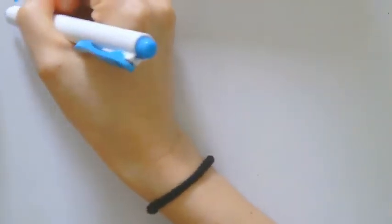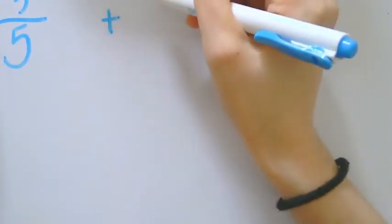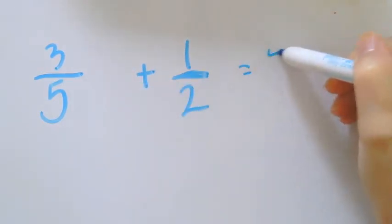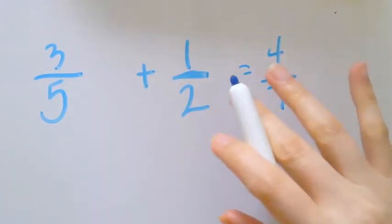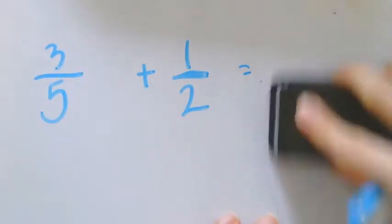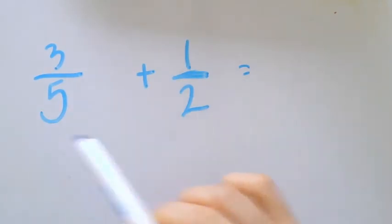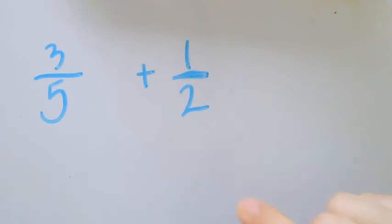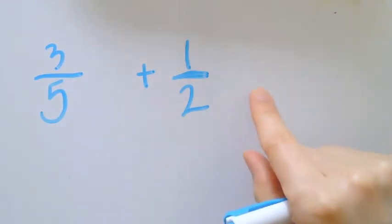Now we're going to move on to making sure that we can add by finding a common denominator. So if we're going to add three fifths plus one half, can I add that up right now? Can I say three plus one is four, five plus two is seven? Yes, I can do that. But that would be wrong. So let's do it correctly.